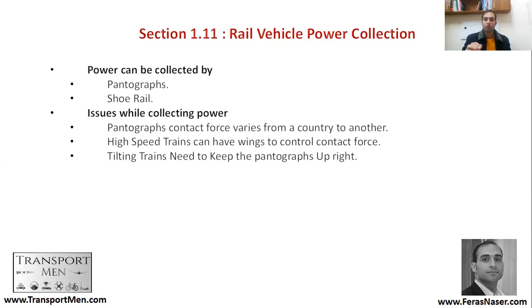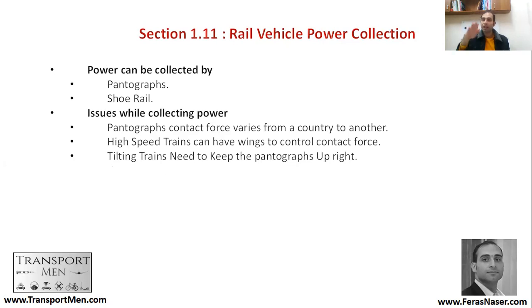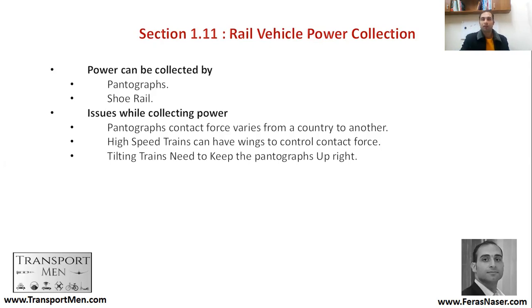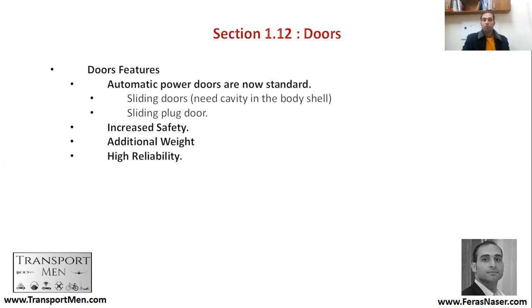Rail vehicle power collection depends on whether the vehicle is electric. It collects power through either pantographs or shoe rail. Pantographs collect from the overhead line using a contact force, while a shoe rail collects from a third rail. Issues include the contact force varying between countries; high-speed trains may have wings to control the pantograph and contact force. On tilting trains, the pantograph must remain upright when the train tilts.